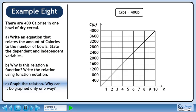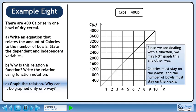This function has a y-intercept of 0 and a slope of 400. Since we are dealing with a function, we may not graph this any other way. Calories must stay on the y-axis and the number of bowls must stay on the x-axis.